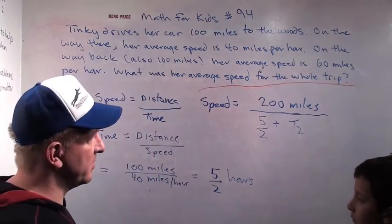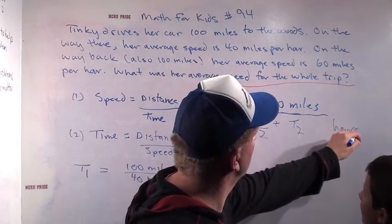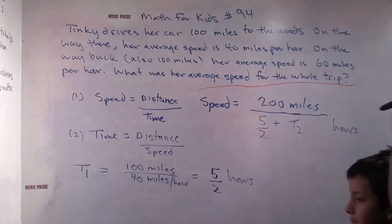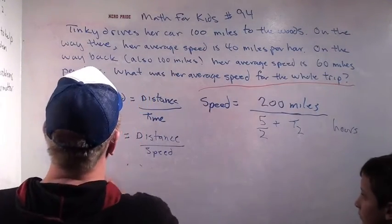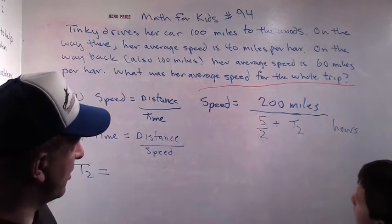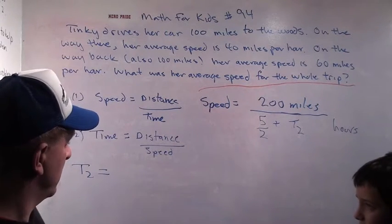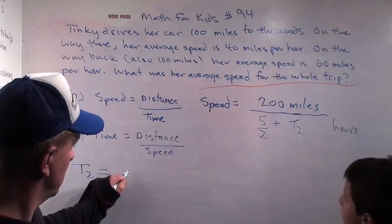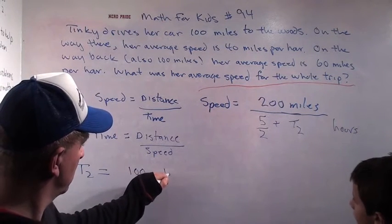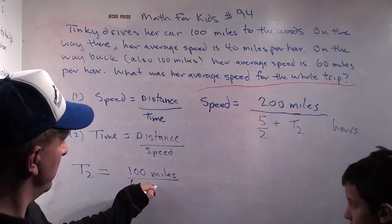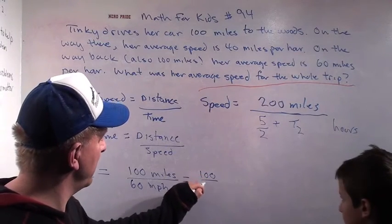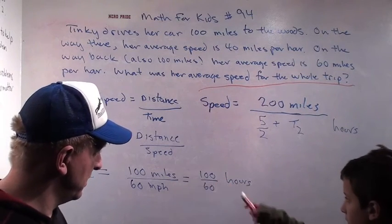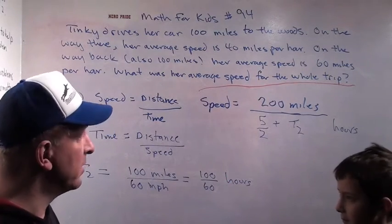Now we have to figure out time two. On her way back, her average speed was 60 miles an hour. We're still going to use equation two: distance divided by speed. She went 100 miles again divided by 60 miles per hour. And this is going to be 100 divided by 60 hours. You knock off a zero, get 10 divided by 6, which is 2 times 5 over 2 times 3 — it's 5 thirds.